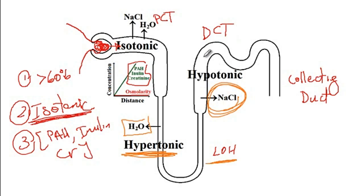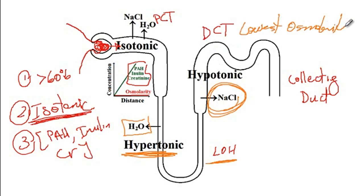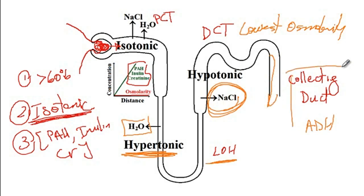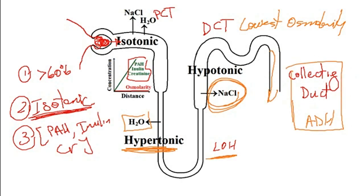The urine that reaches the distal convoluted tubule has the lowest osmolarity. Finally, the urine enters the collecting duct where, depending on the level of ADH, the amount of water reabsorbed is determined — and therefore the concentration of urine is set by the collecting duct.